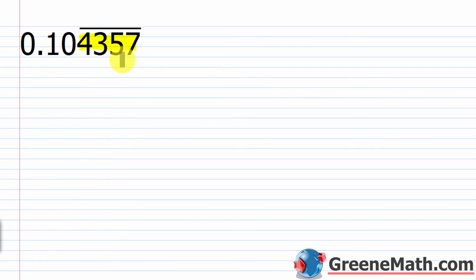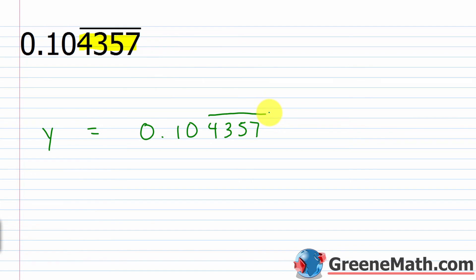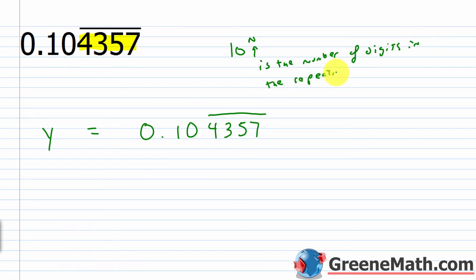Let's take a look at another problem. We have 0.104357 where the 4357 repeats forever. Assign this to a variable — let's use y. So y equals 0.104357 with a bar over the 4, 3, 5, and 7. Multiply both sides by 10 to the power of n, where n is the number of digits in the repeating string. Here we have 4 digits, so multiply by 10 to the 4th power, which is 10,000.